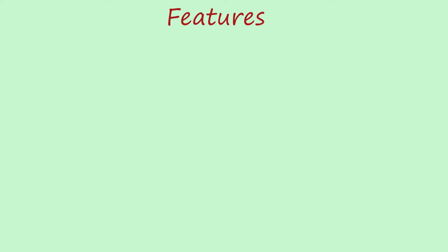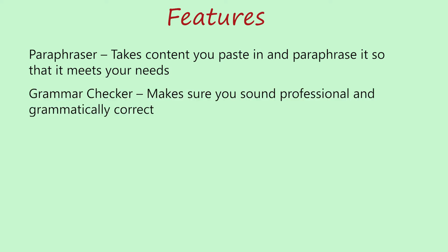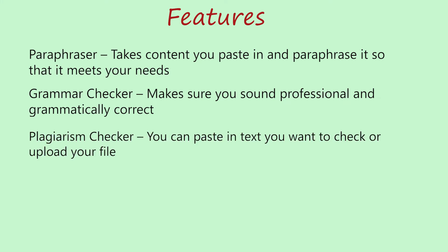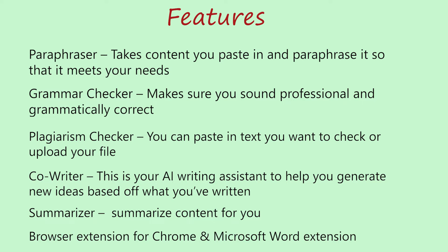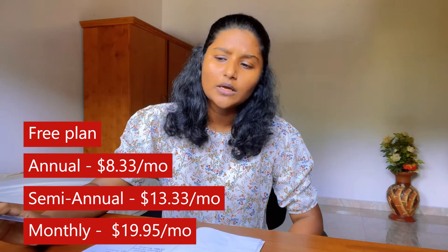The features of Quillbot include a paraphraser that takes content you paste in and paraphrases it to meet your needs, a grammar checker to make sure you sound professional and grammatically correct, a plagiarism checker where you can paste in text or upload your file, a Co-writer AI assistant to help you generate new ideas, and a summarizer. It also has a Chrome browser extension and a Microsoft Word extension. Pricing includes a free plan, an annual plan at about $9 per month, a semi-annual plan at about $13 per month, and a monthly plan at about $20 per month.